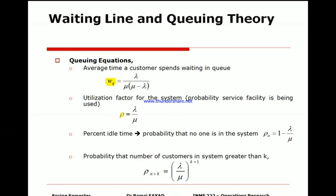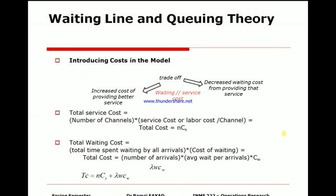We also have the utilization factor (ρ), which represents on average what percentage of the time the operator is busy versus idle. It is calculated as lambda divided by mu (λ/μ). The idle time is therefore one minus rho (1 − ρ).